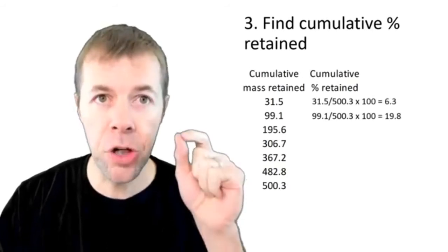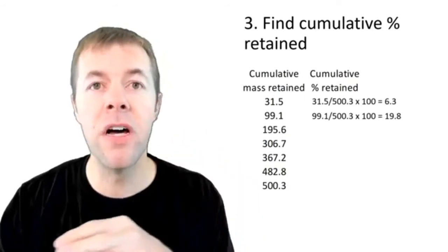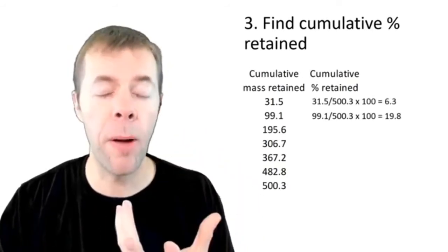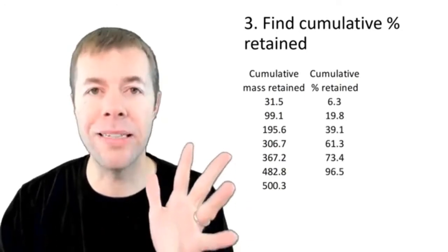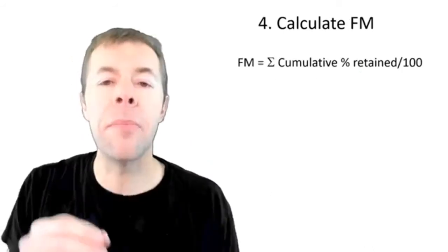I'm going to do that again. 99.1, that's the cumulative mass retained from the second sieve, divided by 500.3, multiplied by 100, gives us 19.8%. And I do this for all of my sieves all the way down.